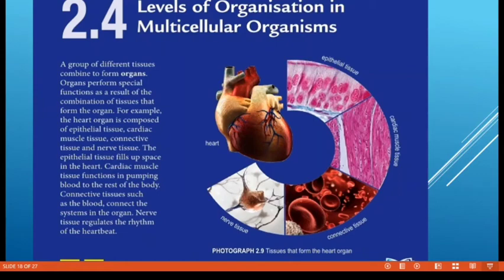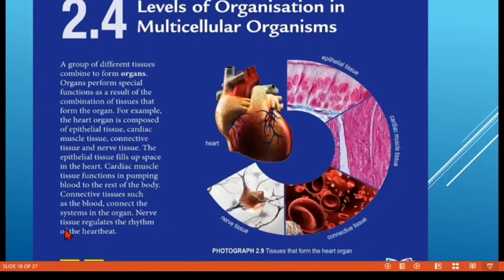After tissue, we have organs. A group of different tissues combine together to form an organ, which performs special functions as a result of this combination. For example, the heart organ is composed of epithelial tissue, cardiac muscle tissue, connective tissue, and nerve tissue. Epithelial tissue fills spaces in the heart; cardiac muscle tissue pumps blood to the rest of the body; connective tissue such as blood connects the systems in the organ; and nerve tissue regulates the rhythm of the heartbeat.